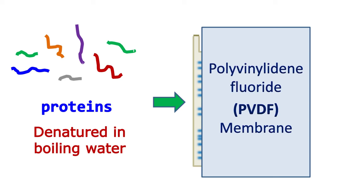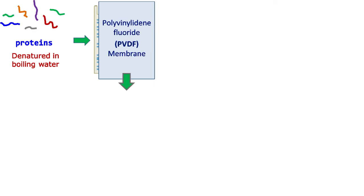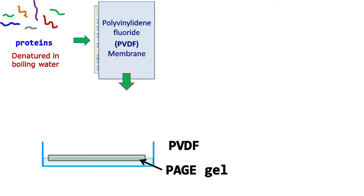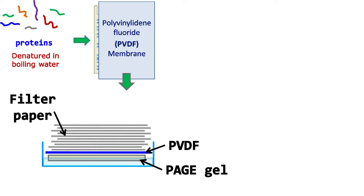There are two ways in which this transfer is done. First, by placing the membrane directly on the gel and stacking filter papers on top along with some weight. This entire set is then placed in buffer solution. As the buffer solution moves up due to capillary action, the proteins also move upwards and finally get attached to the membrane.